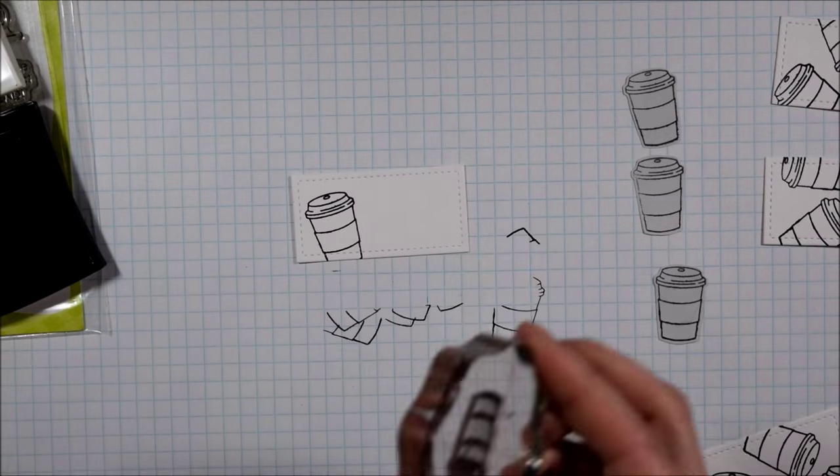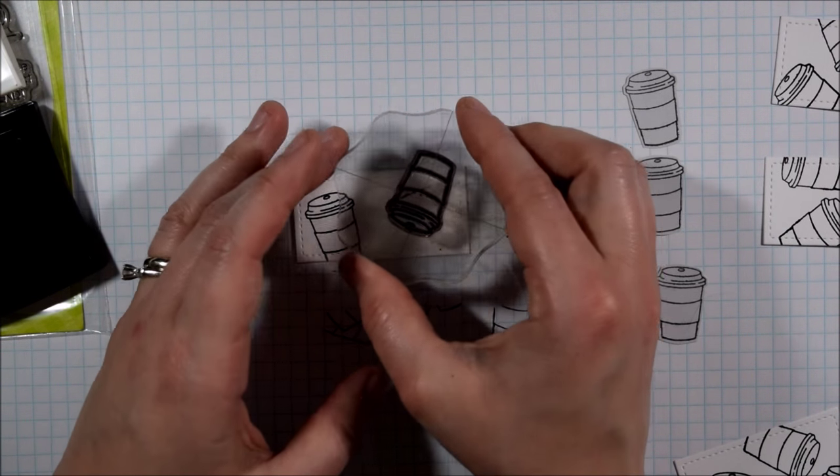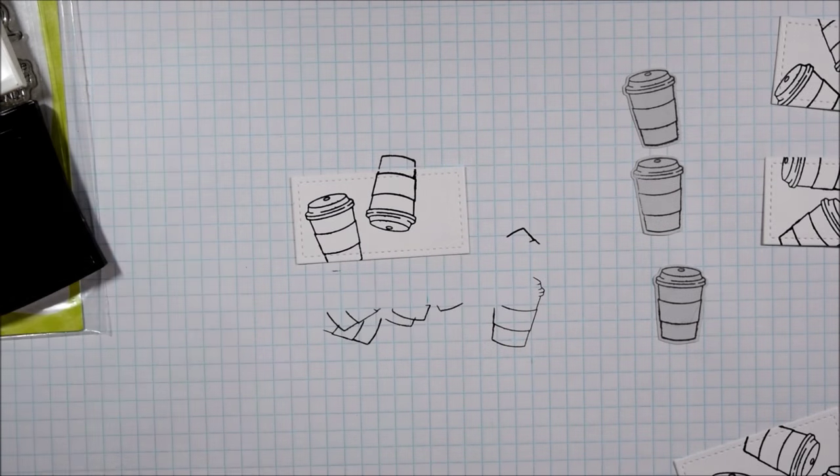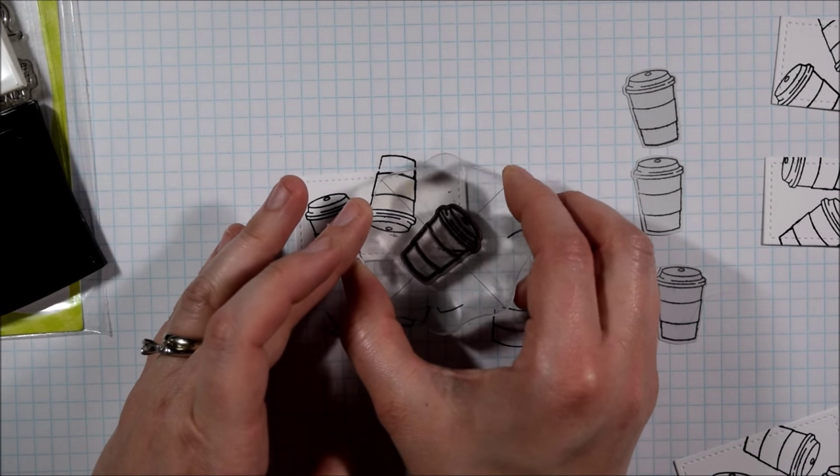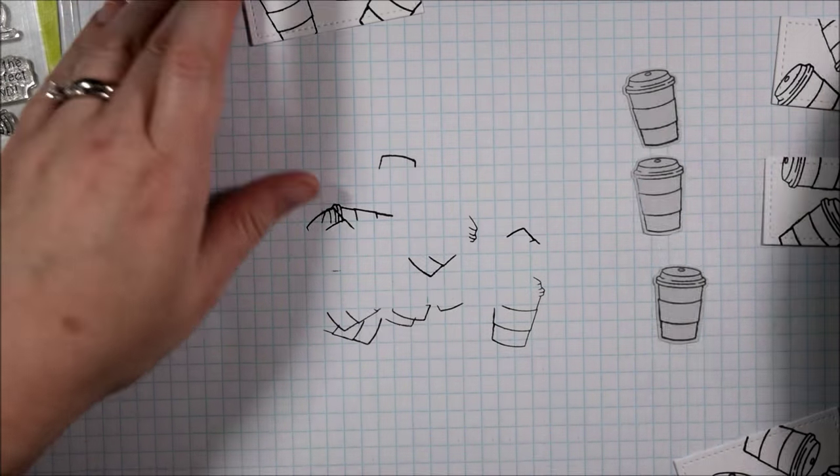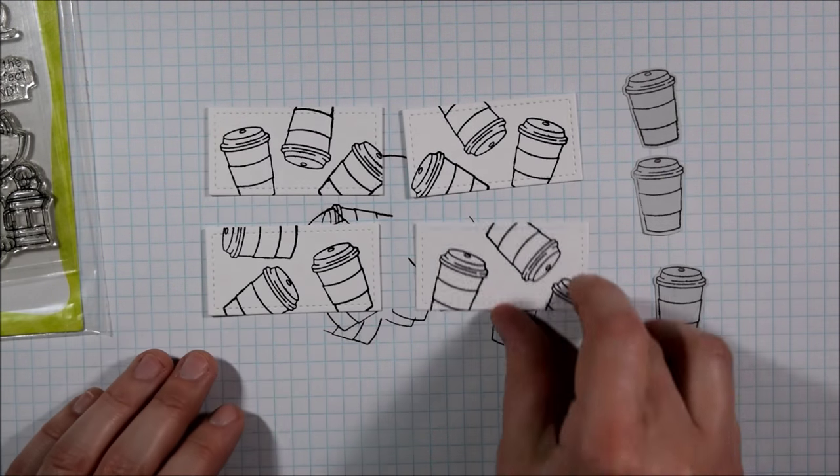And what I'm doing is on each of these rectangle panels which are cut with the Lawn Fawn Stitch rectangle dies I'm stamping three random coffee cups. Over to the side I have three coffee cup masks where I cut out the coffee cup but I left a little bit of a border around it.